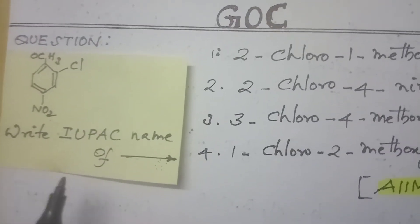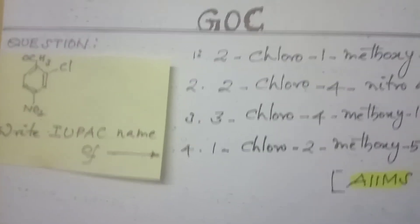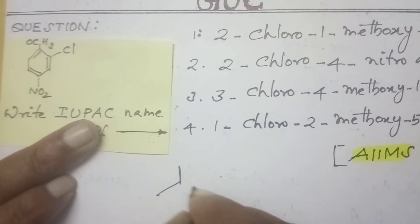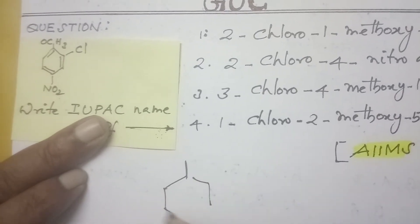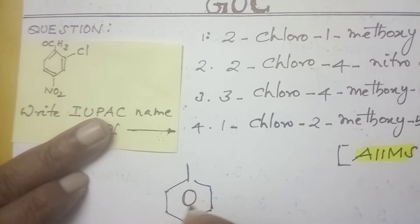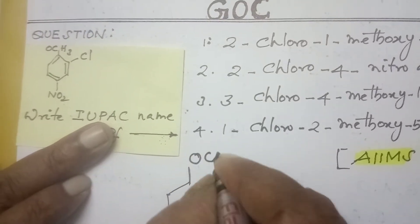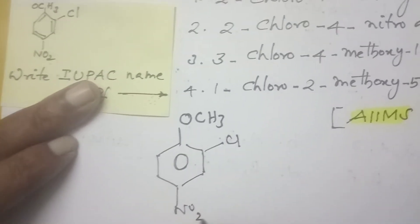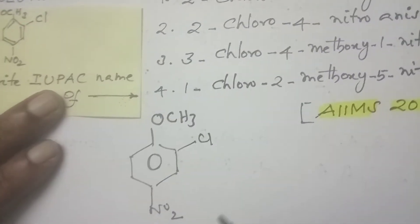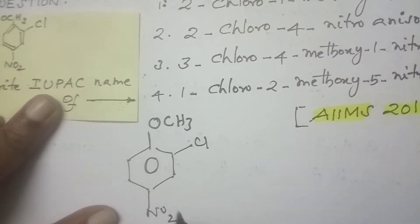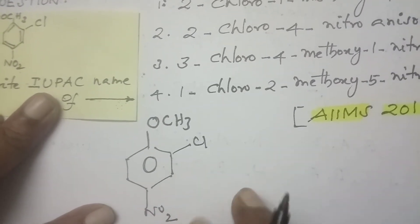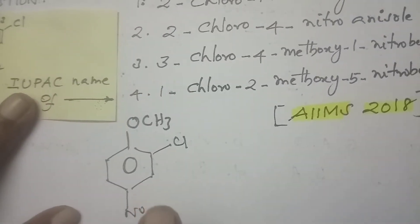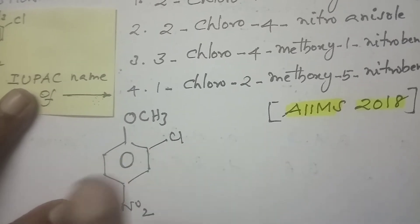The first question is the IUPAC name of one structure is given. Let us see the structure. The structure has a benzene ring with OCH₃, Cl, and NO₂ substituents. The rule is, when all are having substituents, you have to number in such a manner according to alphabetical order.